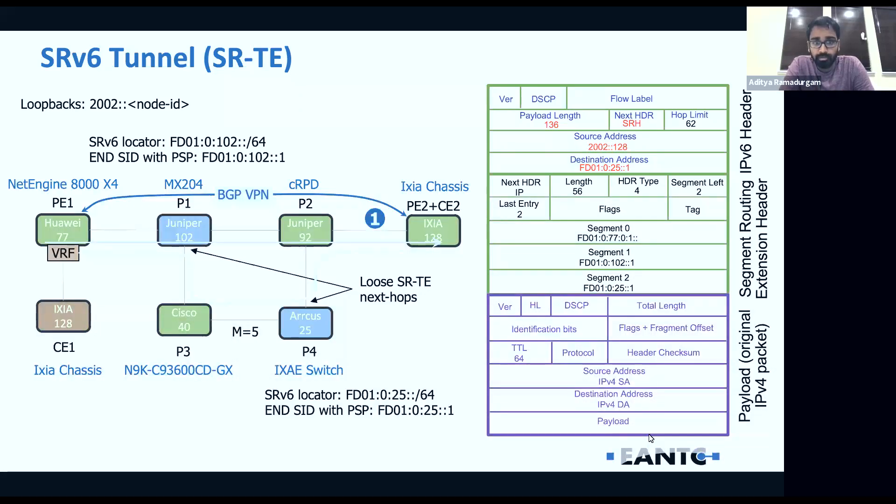This is the packet being sent to Juniper 92. When we go to the next slide, from Juniper's point of view, this IPv6 address has no significance in terms of an end-SID functionality. It's just going to perform an IPv6 route lookup in the IPv6 RIB, and according to its shortest path, it's going to forward it to the Arcus box. When Arcus receives this packet, it matches the end-SID configured on the Arcus box, so it's going to perform a specific functionality which is the end-SID. Since the segments left is two, the first action is the SL is decremented by one. Then the next action is the pointer to the destination IP address is updated. It's going to take the segment one value and update it into the destination IP address field.